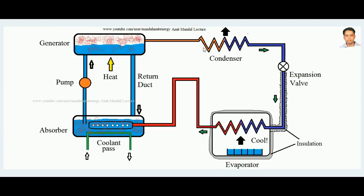This high-pressure ammonia is sent to the condenser where it liberates heat and comes out in liquid form. The condensed liquid ammonia passes through the expansion valve, then through the evaporator where it absorbs heat and becomes vapor again. This vapor returns to the absorber, mixes with cold water, and is pumped to the generator — completing the cycle. The solution leaving the absorber is a strong solution; after ammonia is liberated in the generator, it becomes a weak solution, which returns to the absorber via a return duct.